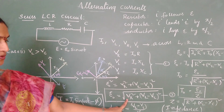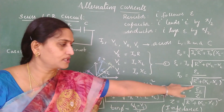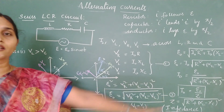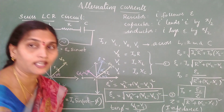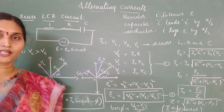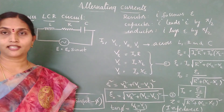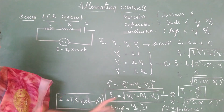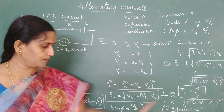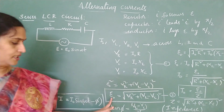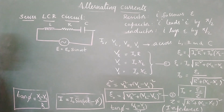So this is the first case: when V_L is greater than V_C, we get I = I₀ sine (omega t minus phi), where tan φ = (X_L − X_C) / R, E₀ = under root of V_R² + (V_L − V_C)², and I₀ = E₀ / Z. Z is called the impedance. Now let us look into the second case of an LCR circuit.